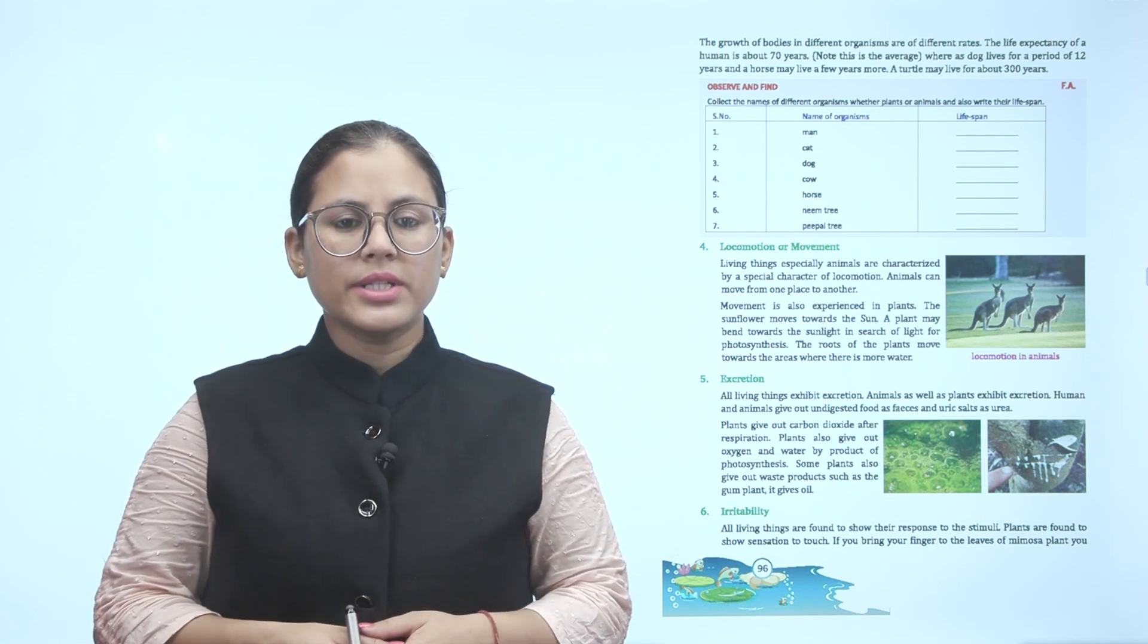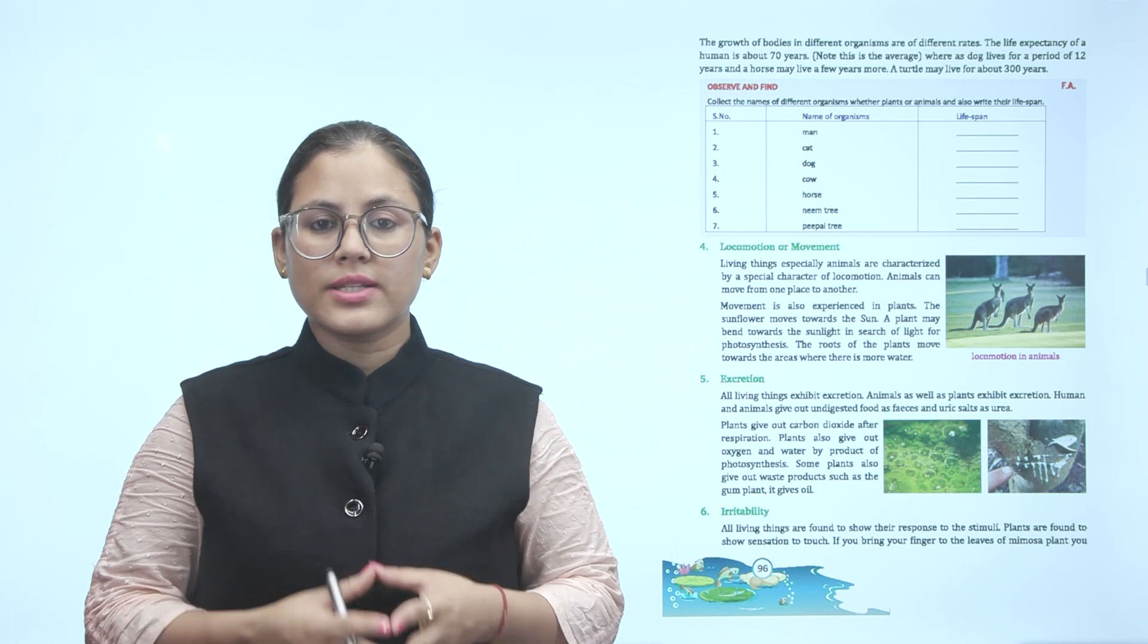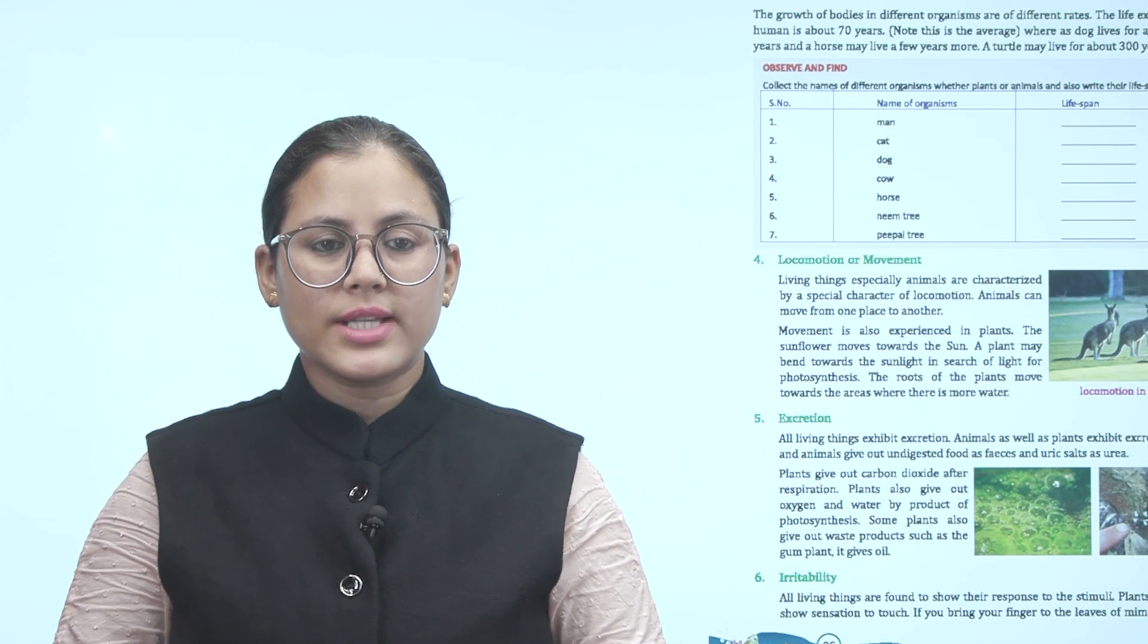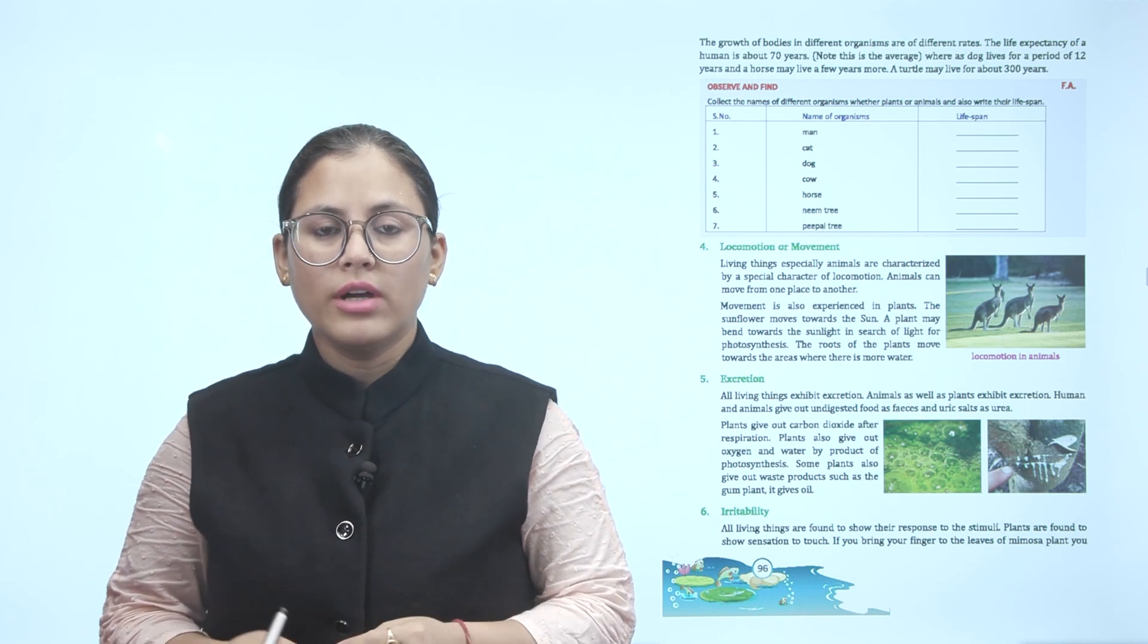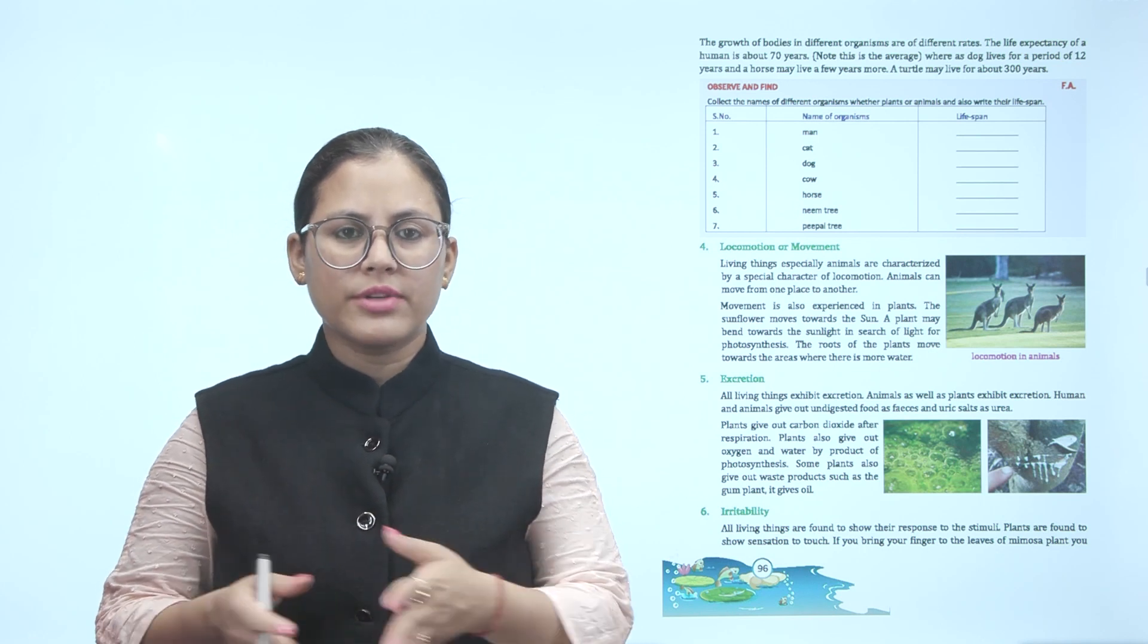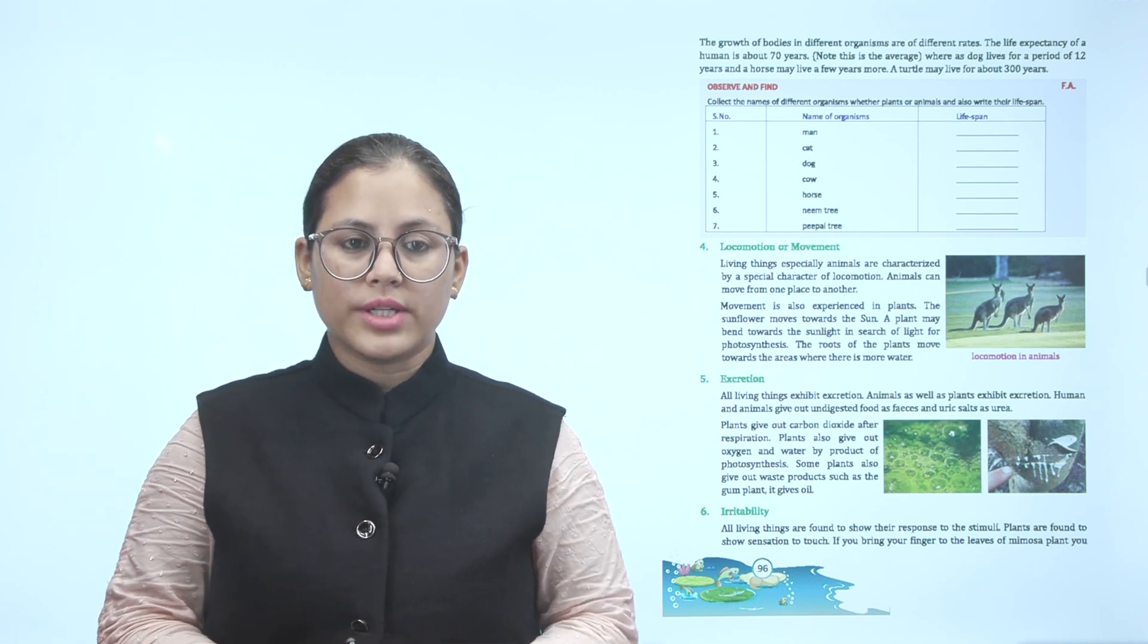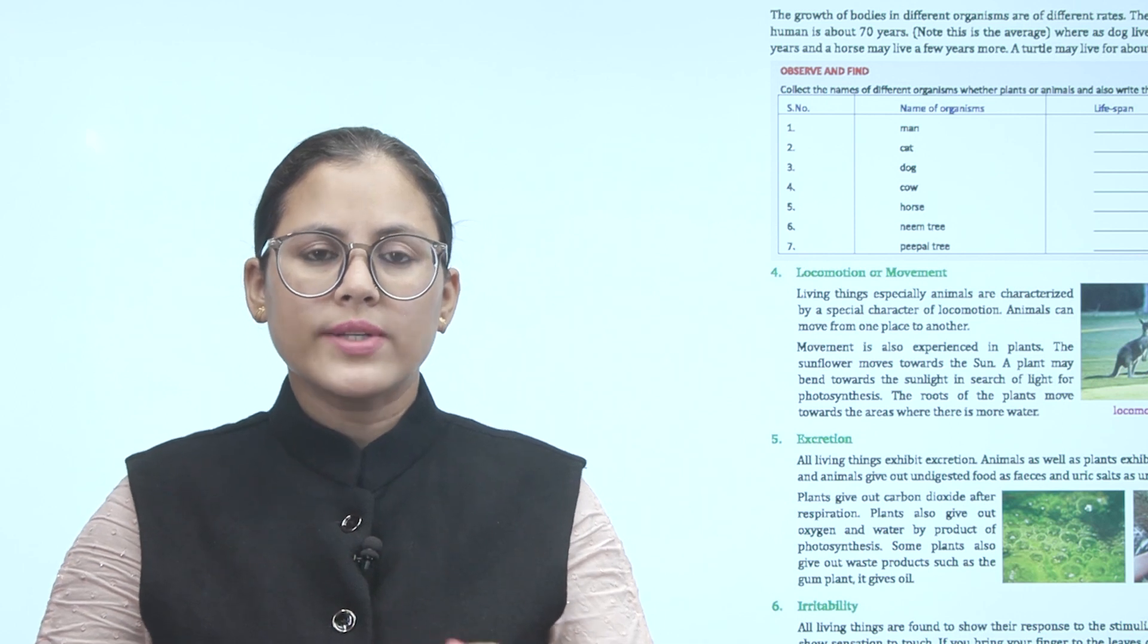Excretion. All living things exhibit excretion. Animals as well as plants exhibit excretion. Humans and animals give out undigested food as feces and uric salt as urea. Plants give out carbon dioxide after respiration. Plants also give out oxygen and water as by-products of photosynthesis. Some plants also give out waste products such as gum or resin. Excretion means removal of undigested food from the body. Plants give out carbon dioxide during respiration. And when photosynthesis is done, water and oxygen are given out as by-products. Some plants produce waste products like gum or resin.